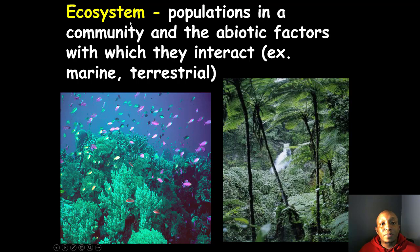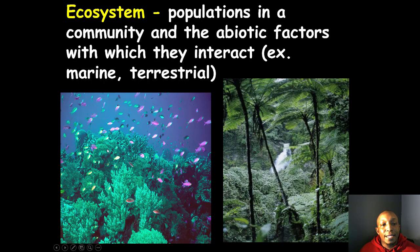Moving up to an ecosystem — this includes the populations in a community and the abiotic factors with which they interact. For example, a marine environment ecosystem includes biotic factors like fish, sharks, and plants, as well as abiotic resources like water and temperature.